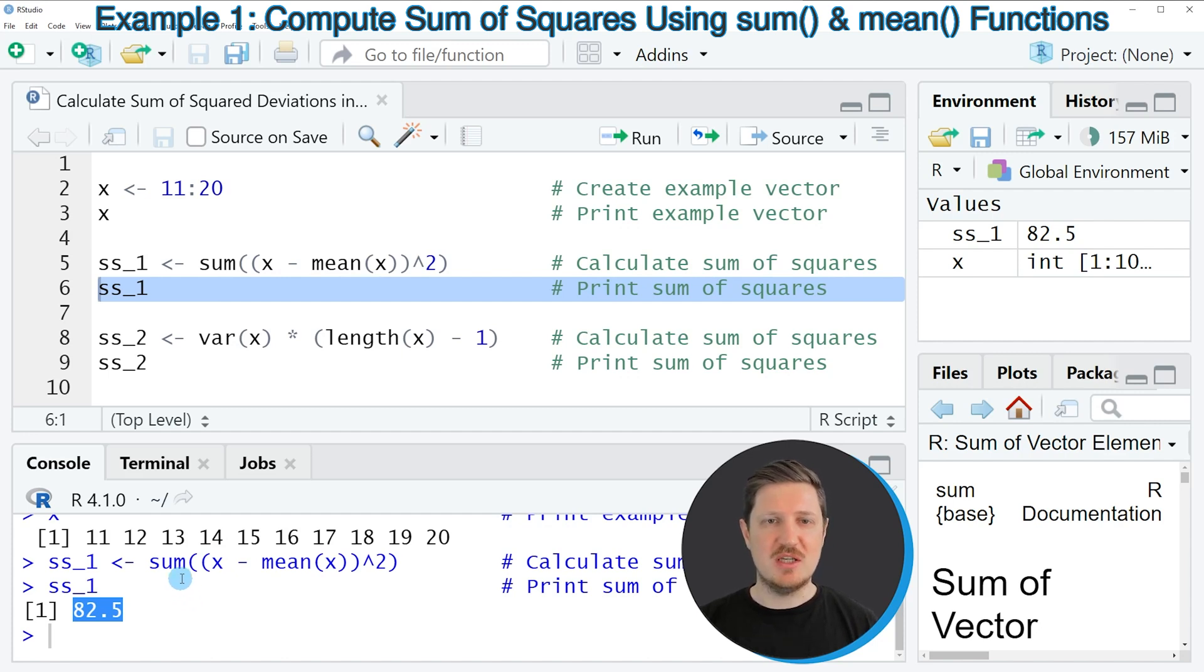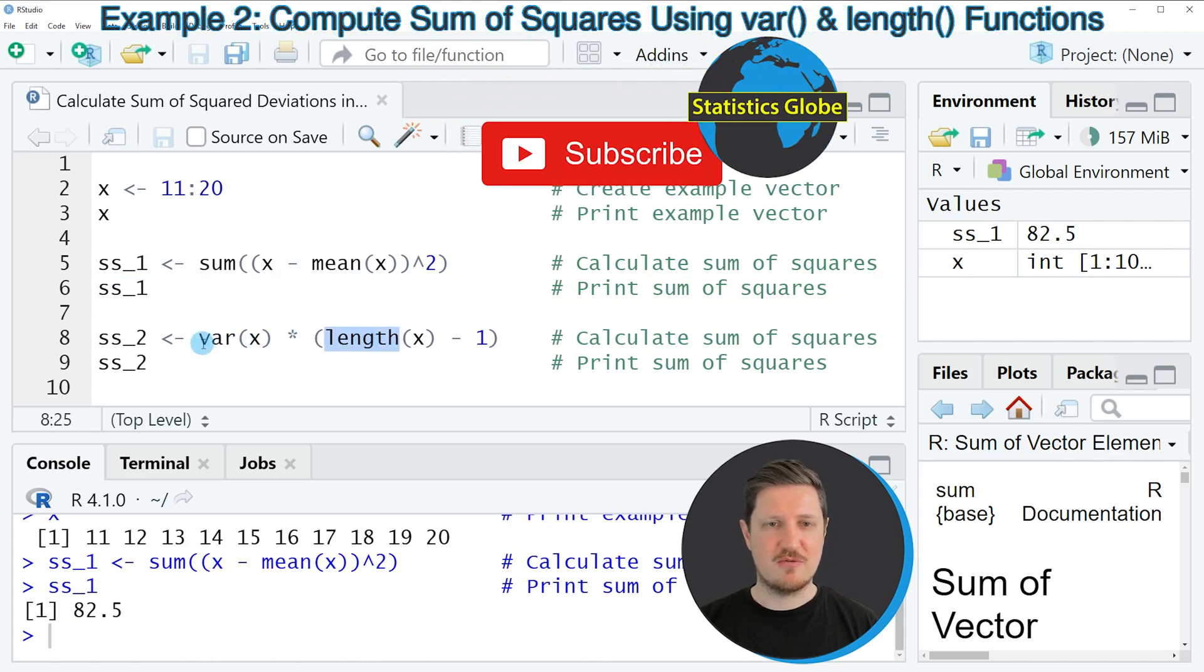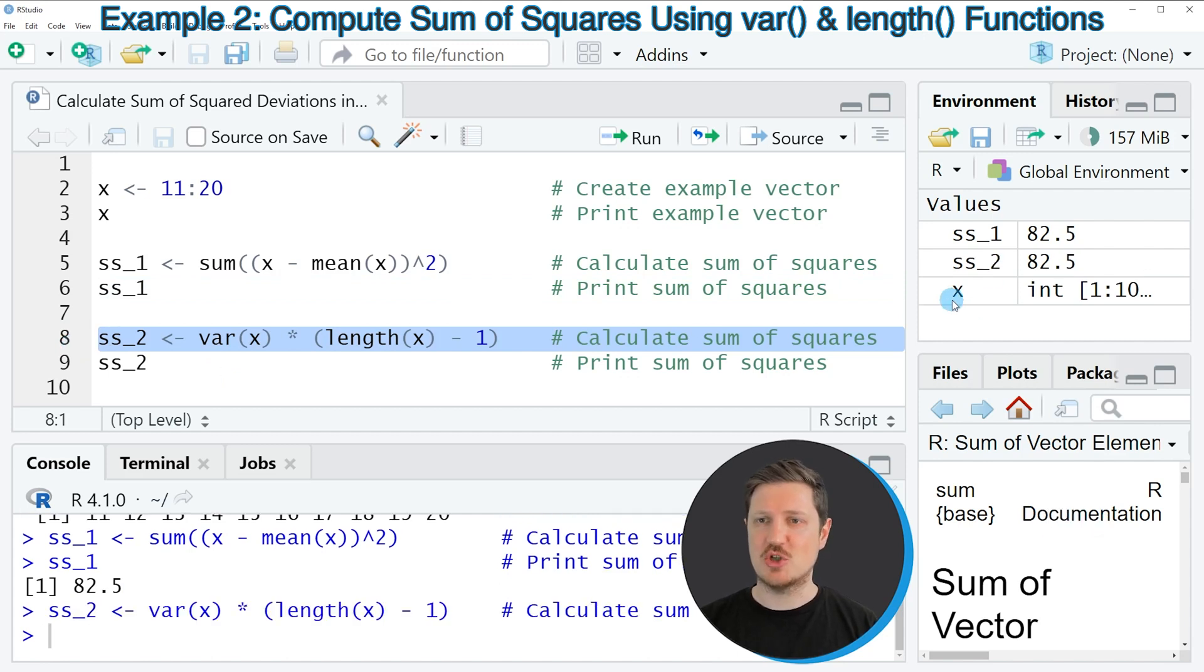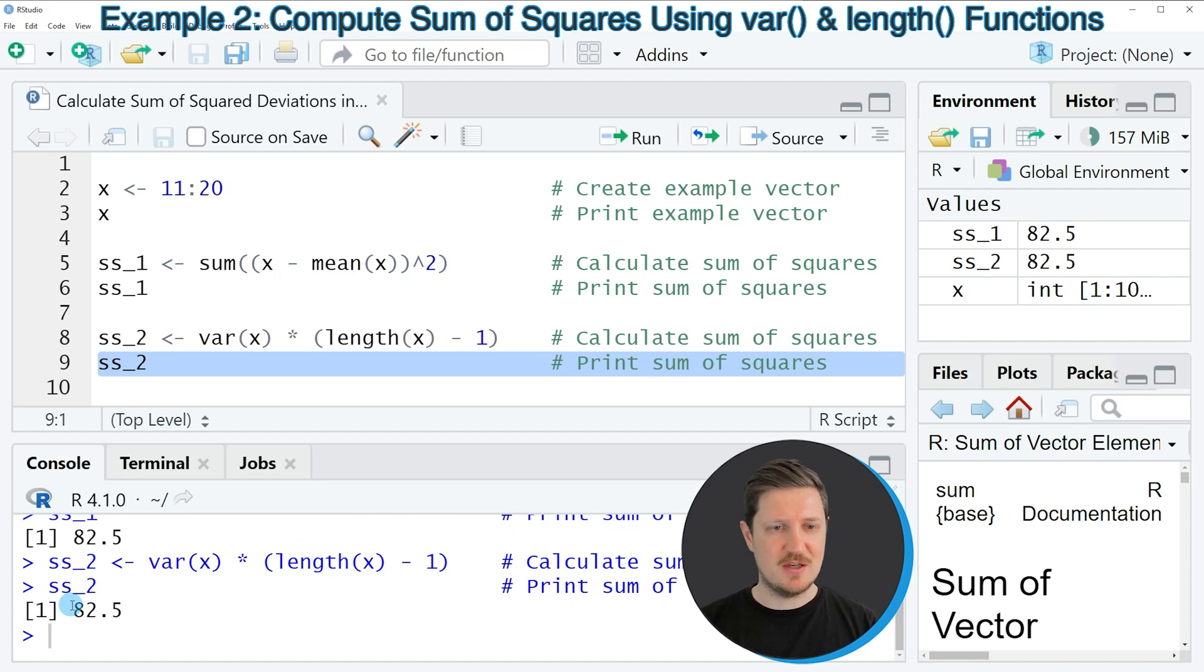Alternatively, to the sum and mean functions, we can also use the var and length functions as you can see in line 8 of the code. So if you run this line of code, another data object is appearing, which is called SS underscore 2. And we can print this data object to the RStudio console by running line 9 of the code. And then you can see that this code also has returned the value 82.5. So the same value as in the first example. However, this time we have used the var and length functions instead of the sum and mean functions.